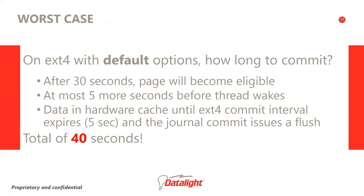Assume we're using ext4 with default mount options and dirty_expire_centisecs and dirty_writeback_centisecs at their defaults, with insufficient dirty data to trigger the dirty_background_ratio threshold. After dirtying a page, how long before it's committed to non-volatile storage? After 30 seconds, the page becomes eligible for a write. It could be another 5 seconds before a flusher thread wakes up and sees the page needs to be written. Then data can remain in the hardware cache for up to another 5 seconds before ext4's commit interval expires and a journal commit issues a flush — a total of 40 seconds. This calculation is similar for other file systems: for Reliance Nitro the configurable timed transaction interval applies, and for UBIFS there's a non-tunable 3-to-5 second timeout for the write buffer.